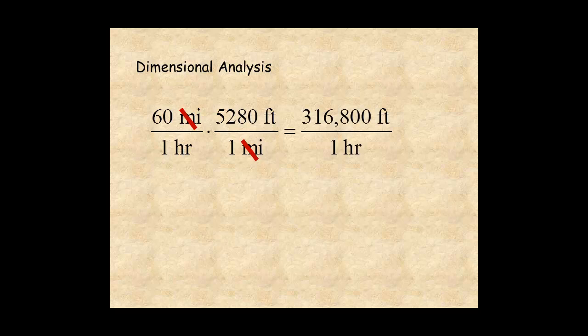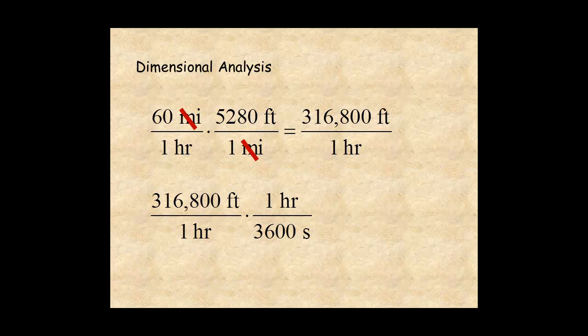You can continue the conversion, multiply by 1 hour over 3,600 seconds. Hours cancel for feet per second. So, 60 miles per hour equals 88 feet per second.